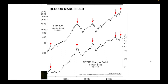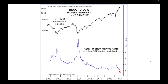At the same time, we have record margin debt. Margin debt is where people borrow money to buy shares. We see these peaks coinciding with market peaks as well — the big one previously happened in the year 2000, then again in 2007-2008, and we've got the whole thing again but even bigger now, because this is logarithmic and measured in billions. At the same time, we've got record low money market investment, and the retail money market ratio as a percentage of S&P market capitalization has dropped through the floor.